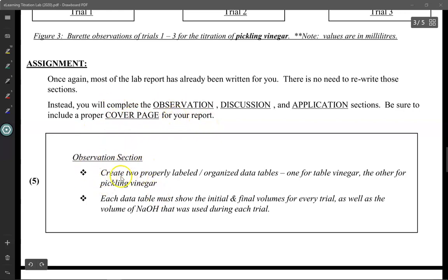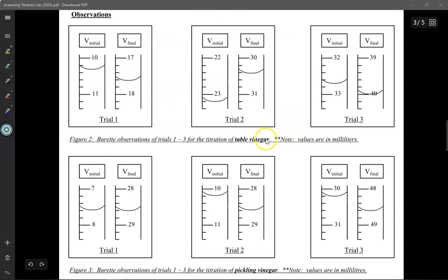The first thing I need you to do is to create two properly labeled and organized data tables, one for table vinegar and the other one for pickling vinegar. Here are the observations for table vinegar and here are the observations for pickling vinegar. In the end, you'll have two data tables and each data table will have three separate trials.